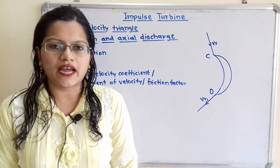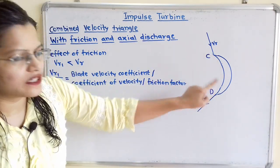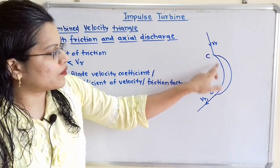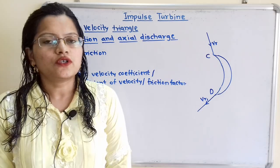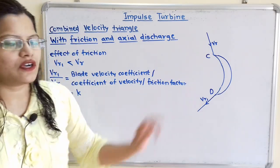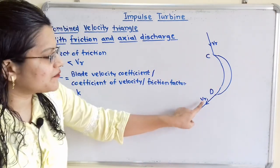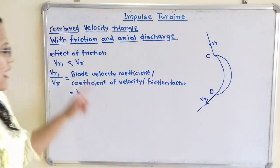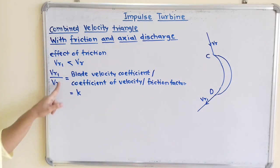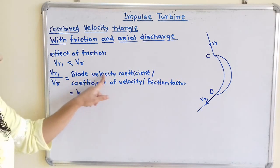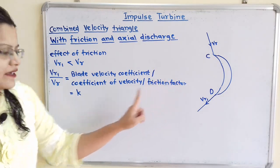Let us first understand the effect of friction. Some resistance is always offered by the blade surface on the steam jet when it is gliding over the surface. The effect of this friction is that it reduces the relative velocity of the steam jet. So whenever friction is present, Vr1 is less than Vr, and the ratio of Vr1 to Vr is known as the blade velocity coefficient. It is also known as the coefficient of velocity or friction factor, and its notation is K.